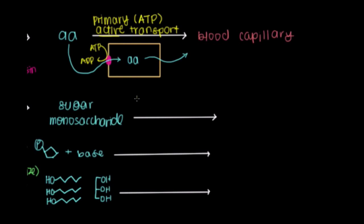Monosaccharides, or sugars, sort of have a similar thing going on, but instead of primary active transport, we have what's called secondary active transport going on.